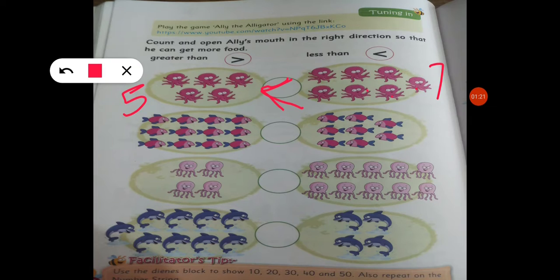Now let's count the fish. One, two, three, four, five, six, seven, eight, nine, ten, eleven, twelve. Here are twelve fish.